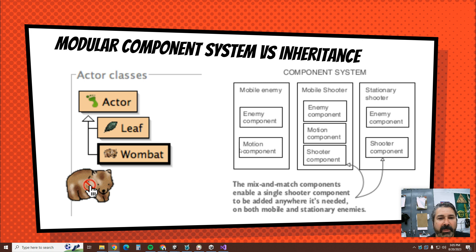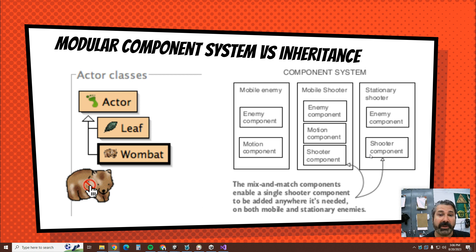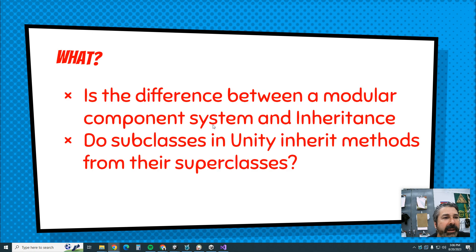You write a script or code that teaches characters how to move and drop it on the ones that need it. So those characters are enemies and they move. Then you write a shoot script and drop that on the characters that shoot, maybe adding a component like a 3D bow and arrow. They all integrate together. It's quicker and more flexible to have this component system.